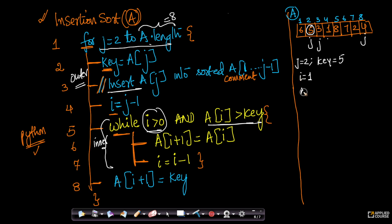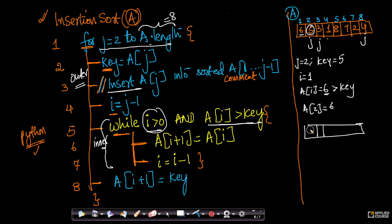When both conditions are true, the code does a shift operation: A[i+1] = A[i]. So A[2] = A[1] = 6. The 6 gets copied to position 2, replacing the 5 there. Then i = i - 1, so i becomes 0. The loop restarts, but now while i > 0 — no, i equals 0, so we exit the while loop.